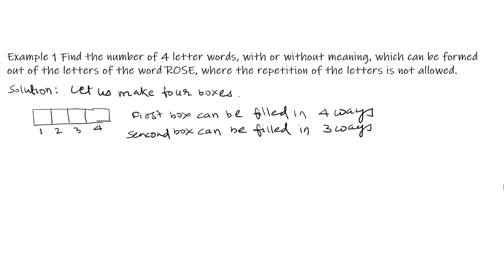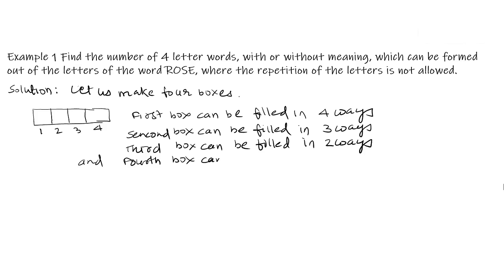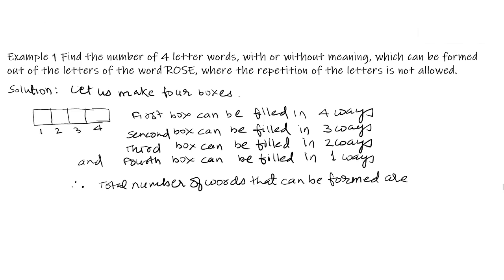When any letter is already filled, the second box can be filled from the remaining three letters, so it can be filled in 3 ways. The third box can be filled in 2 ways when two letters are already used. The fourth box can be filled in 1 way by the remaining one letter. Therefore, by the fundamental principle of multiplication, the total number of words that can be formed are 4 × 3 × 2 × 1 = 24 words.